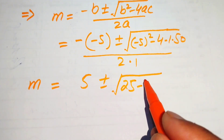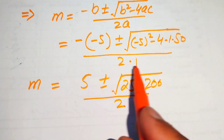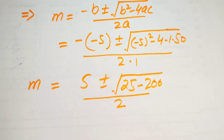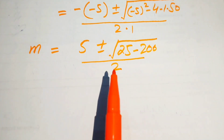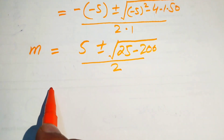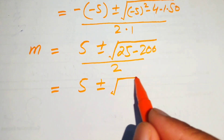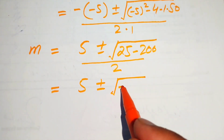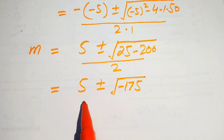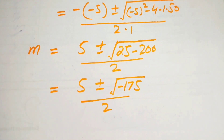This gives us 5 plus or minus the square root of 25 minus 200, which equals the square root of negative 175, all divided by 2.